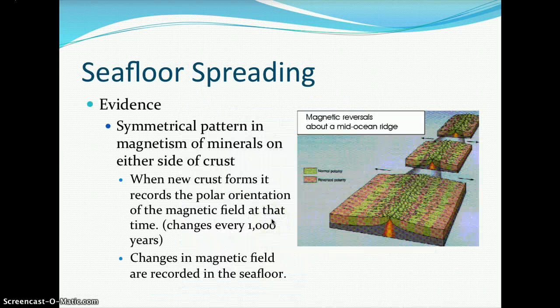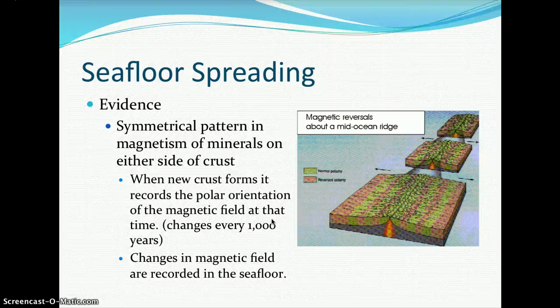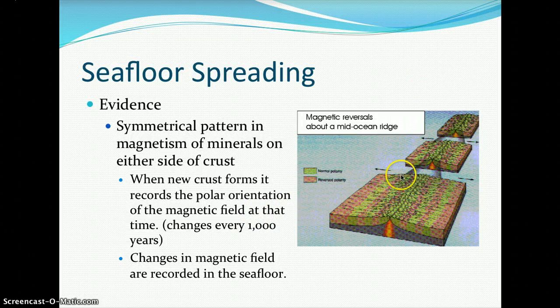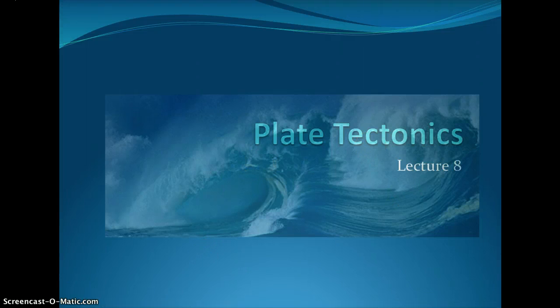Further evidence for seafloor spreading includes a symmetrical pattern in the magnetism of minerals on either side of the crust. When new crust forms, it records the polar orientation of the magnetic field at that time, with magnetic pole changes occurring every thousand years. These changes in magnetic field are recorded in the seafloor, shown in green for normal polarity and pink/red for reverse polarity, occurring every one thousand years.